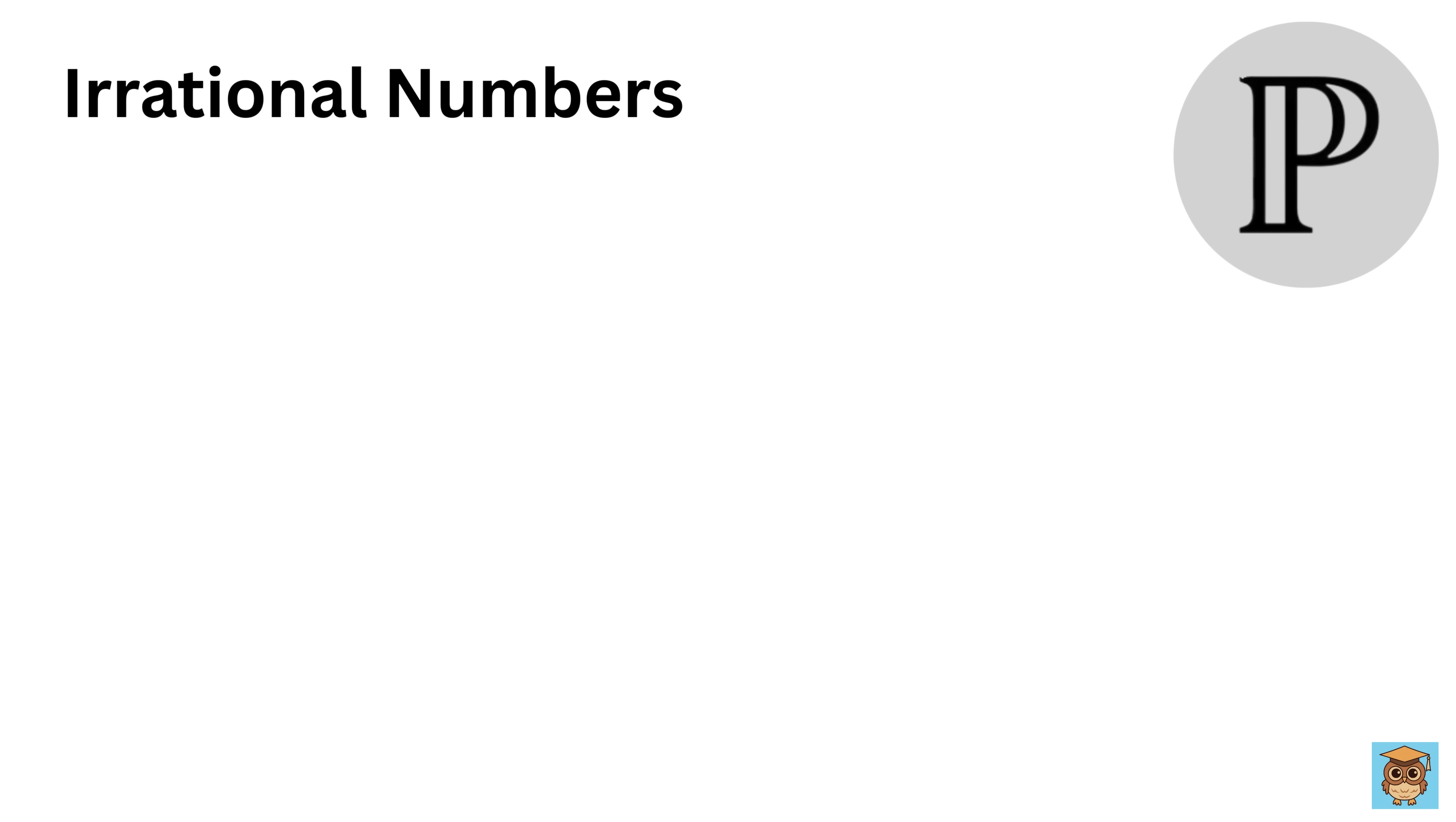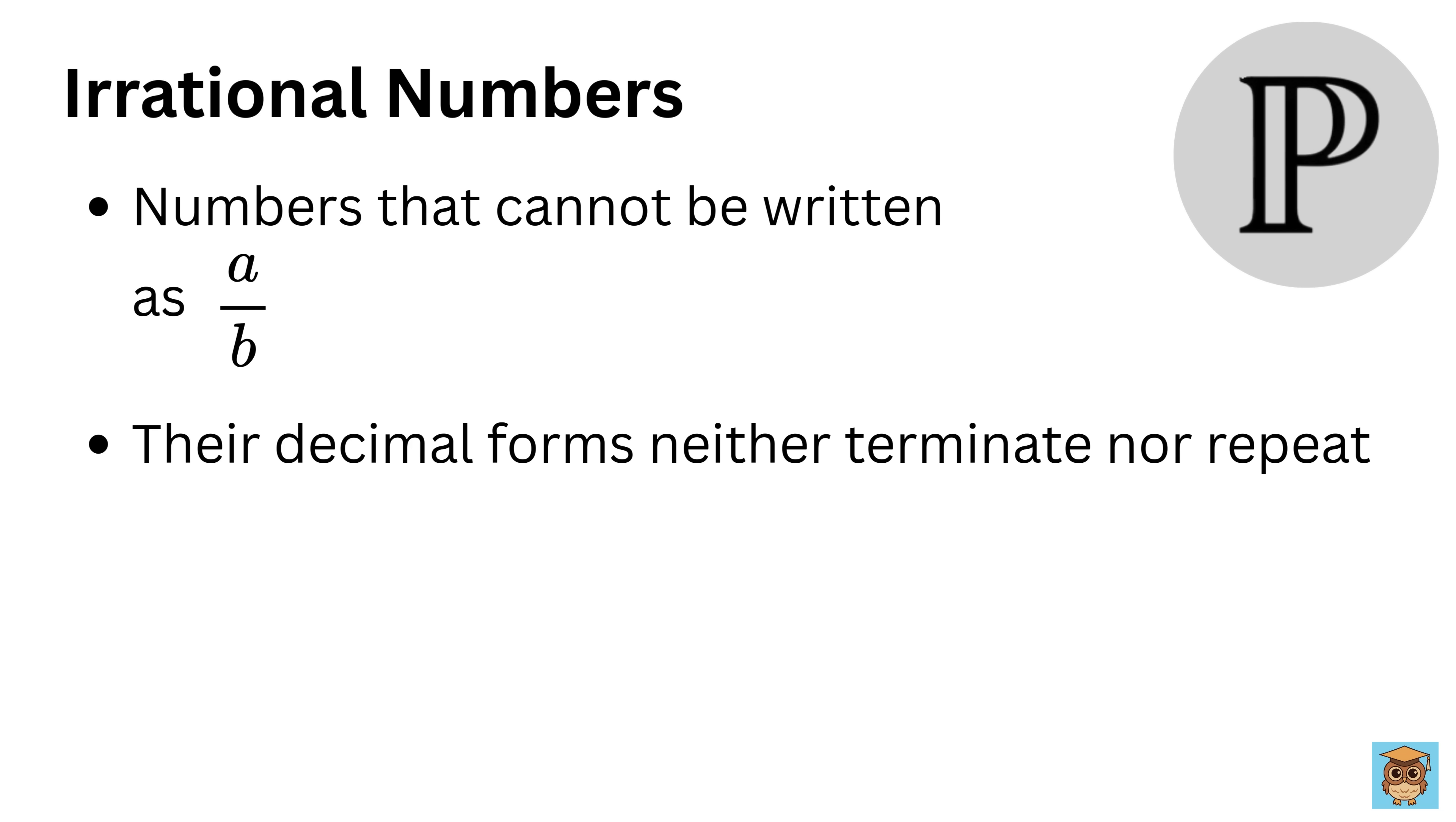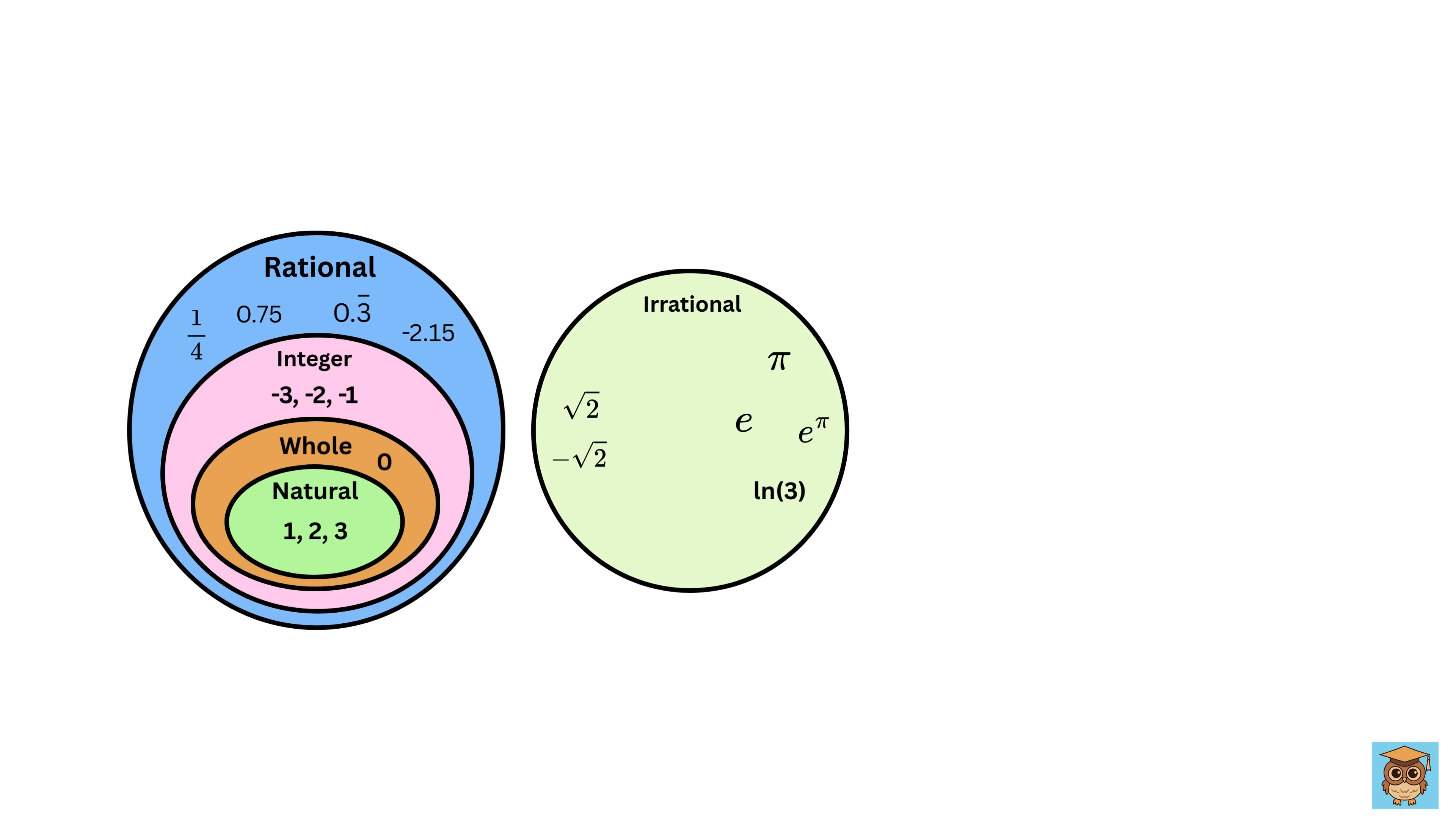Irrational numbers cannot be expressed as a fraction of two integers. Their decimal forms neither terminate nor repeat. Some well-known examples of irrational numbers are the square root of 2, pi, and the number e. These numbers continue infinitely without a predictable pattern.